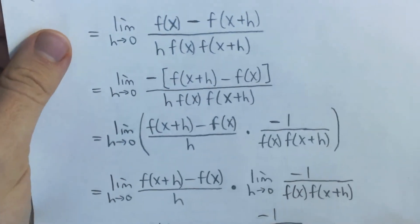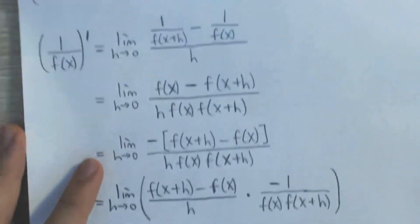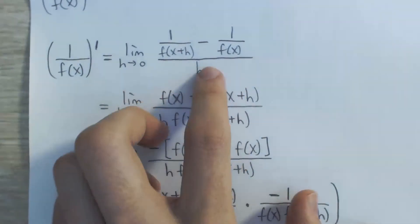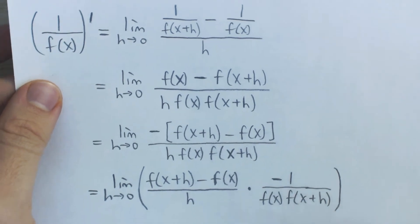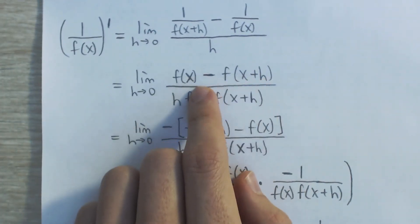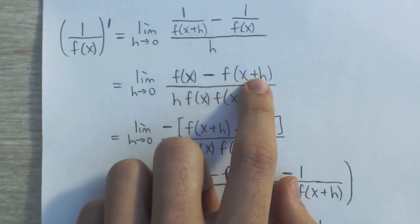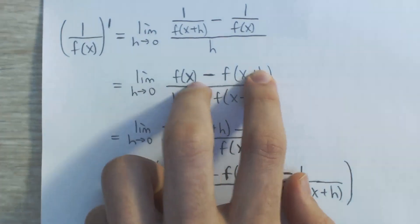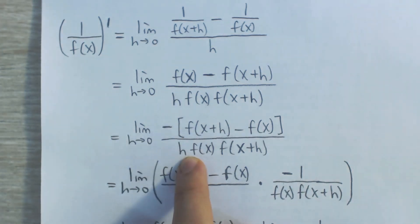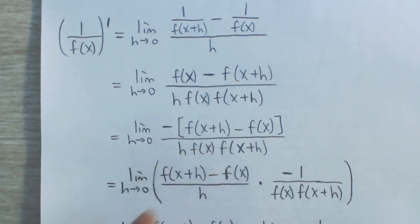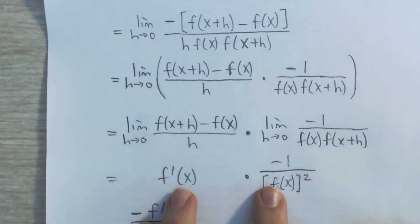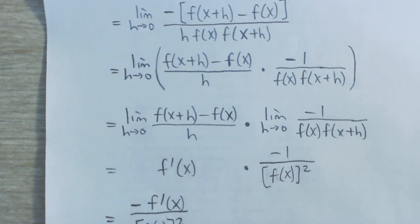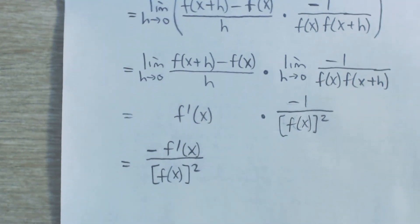And so that is our proof. What we did: we got rid of some denominators, noticed the numerator was the opposite of what we wanted and flipped the sign by factoring out a negative, used the product rule for limits, and then evaluated each limit — and that gave us our final answer.